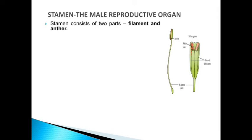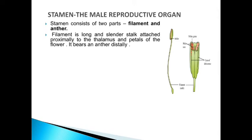Filament and anther together form the structure known as stamen. The filament is a long and slender stalk attached proximally to the thalamus and petals of the flower, and it bears an anther distally. So the anther is present at the tip of the filament, and the filament is the long portion of the stamen.